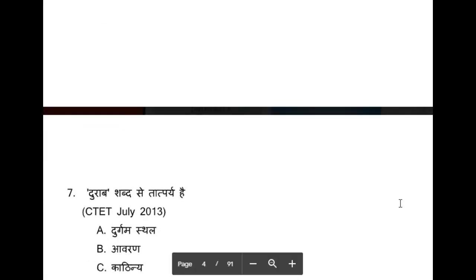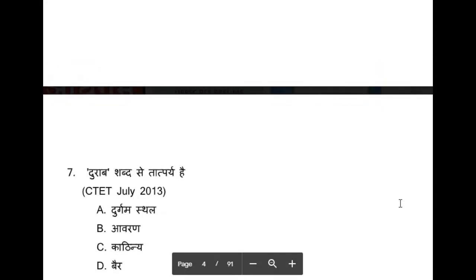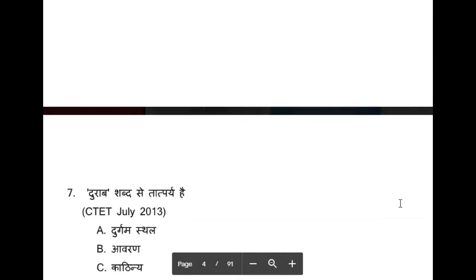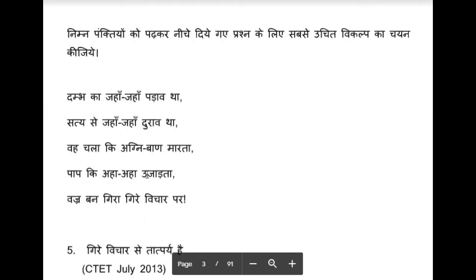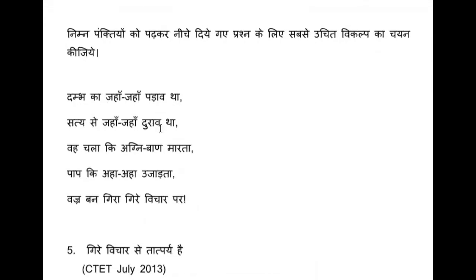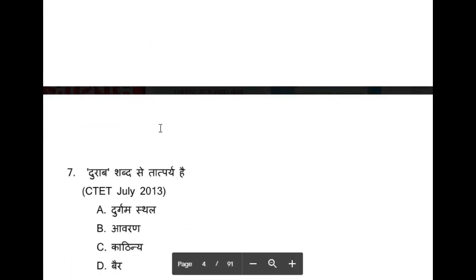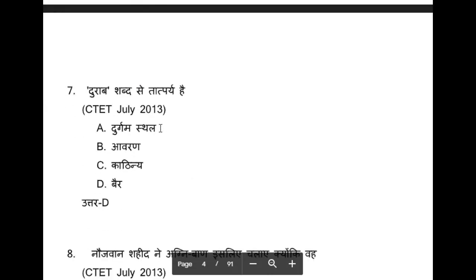Question number 7: You can see that most questions are being asked from vyakaran — grammar — not from the paragraph directly. So 'dhuraab shabd se taatpari': durga misthal se / avran se / kaathin se / ya 'bear' se? When you go back and read the paragraph: satya se jahaan jahaan dhuraav tha — meaning 'bear' — satya se jahaan jahaan hame bear tha. So dhuraab ka matlab ho jayega 'bear'. The option is option D — bear.